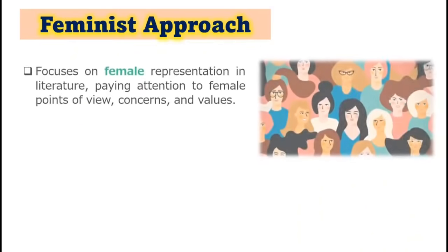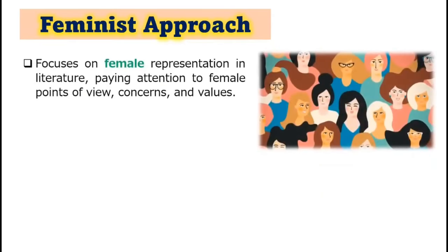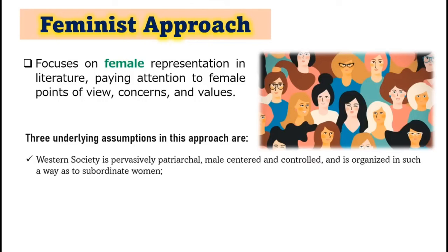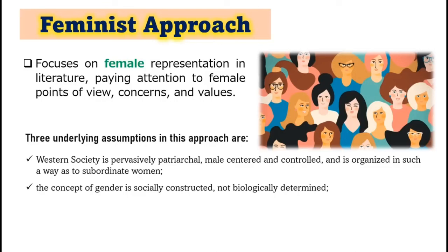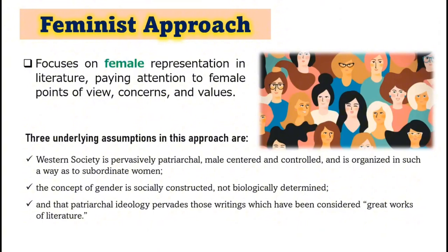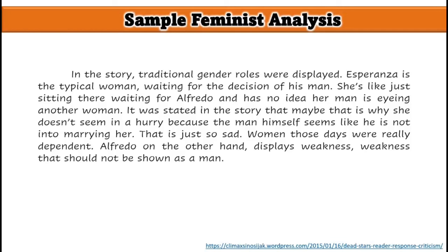Next is the feminist approach. This approach focuses on female representation in literature, paying attention to female points of view, concerns, and values. Three underlying assumptions in this approach are: Western society is pervasively patriarchal, male-centered and controlled, and organized in such a way as to subordinate women; the concept of gender is socially constructed, not biologically determined; and that patriarchal ideology pervades those writings which have been considered great works of literature. In the sample feminist analysis, you can see that women during those days — through the character of Esperanza — are portrayed as the typical women who were very dependent on men, as they could not make decisions for themselves.